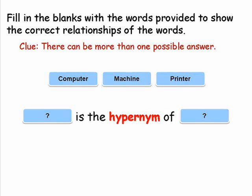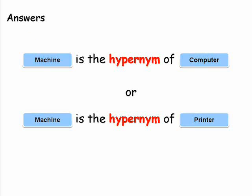Let's practice more. Fill in the blanks with the words provided to show the correct relationships of the words. There can be more than one possible answer. Machine is the hypernym of computer — machine is the group which computer belongs to, and computer is a type of machine. We can also say that machine is the hypernym of printer; printer is a member of the group of machines.